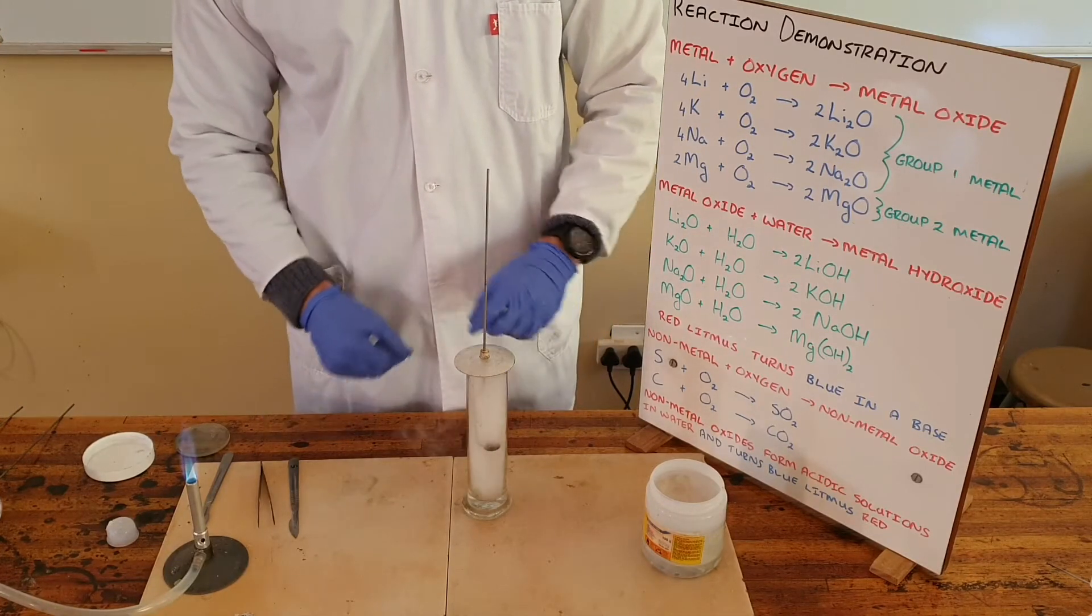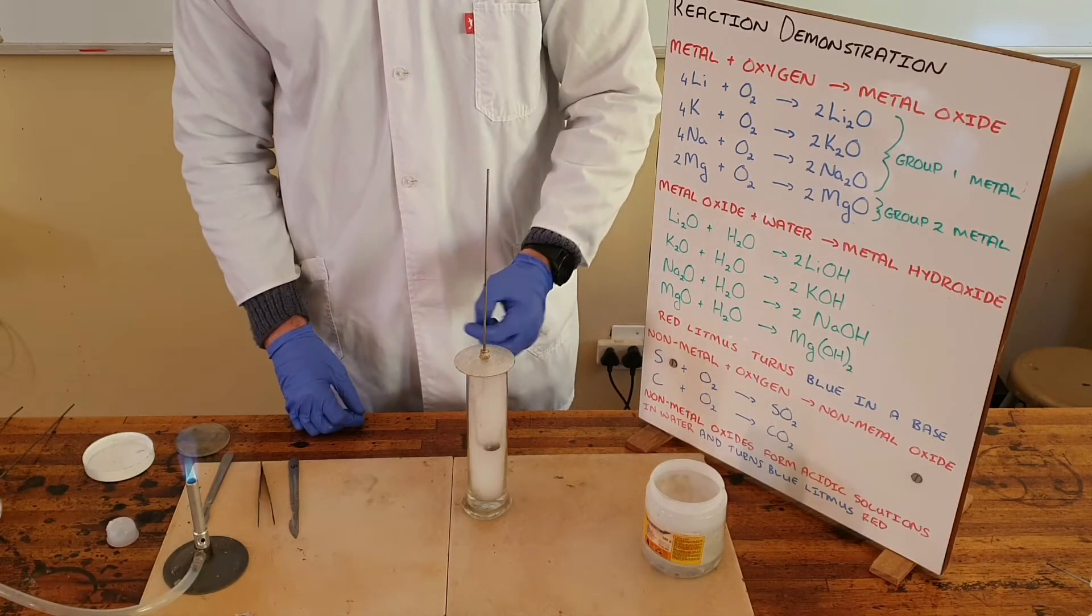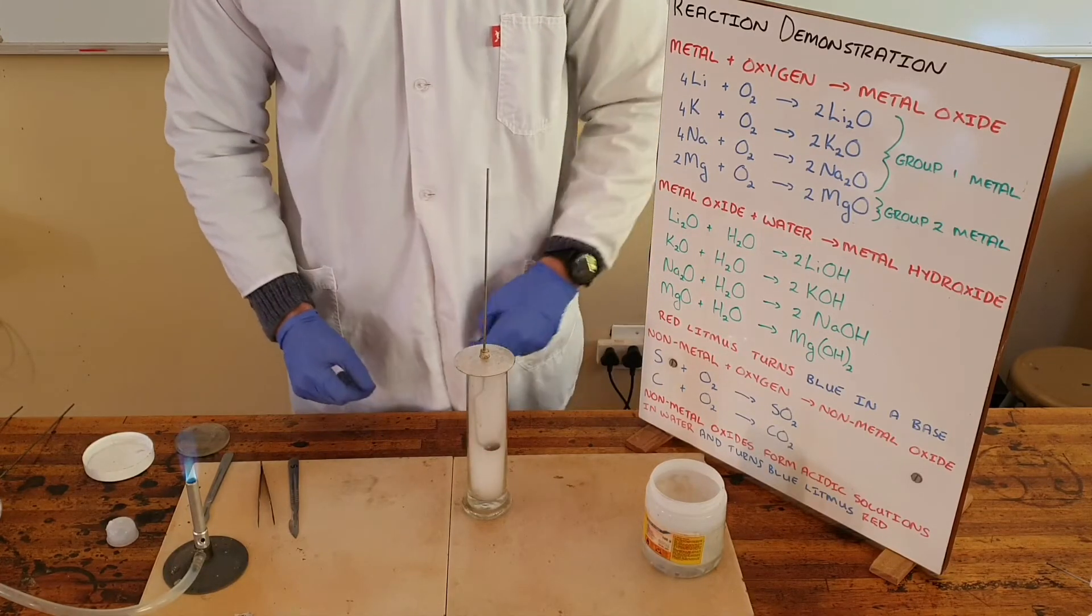We can now see that there is a certain amount of potassium oxide being formed in that white smoke, which is now reacting with the water that is in the bottom of the gas jar. We know that when a metal oxide reacts with water it forms a basic solution.